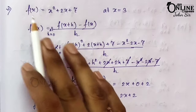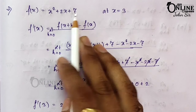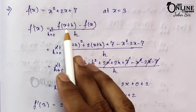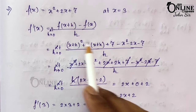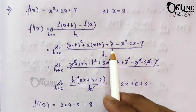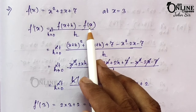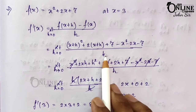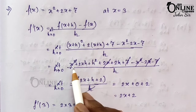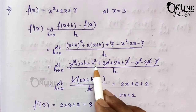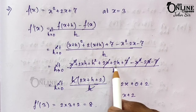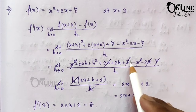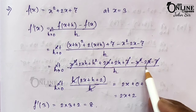Number 6: f(x) = x² + 2x + 7 at x = 3. By definition, f'(x) = limit h→0: instead of x write x+h, so (x+h)² + 2(x+h) + 7, then minus x² - 2x - 7, all divided by h. Expanding (x+h)² gives x² + 2xh + h², then 2x + 2h, plus 7, minus x² minus 2x minus 7.